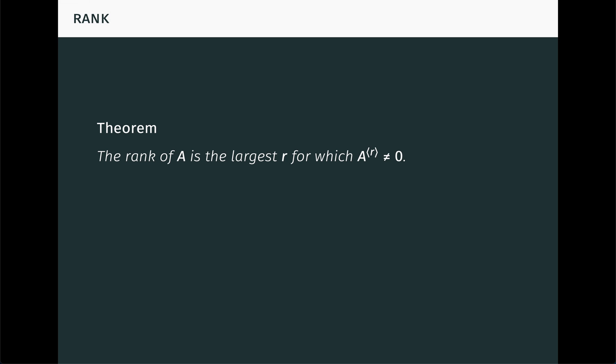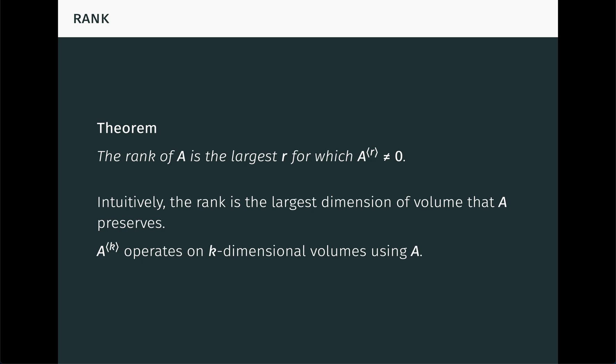First, the rank of A is just the largest non-zero compound power of A. This follows from the determinantal characterization of rank which we covered in a prior video. Recall geometrically, if we view A as a linear transformation of a space, then intuitively the rank is the largest dimension of a volume A preserves in the space, in the sense of mapping to another volume of the same dimension and not lower dimension. This suggests that the kth compound power of A, when viewed as a linear transformation itself, operates on k-dimensional volumes using A. This intuition is correct and can be made precise in exterior and geometric algebra, but we won't say more about that in this video.